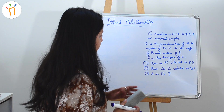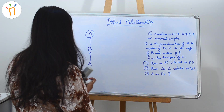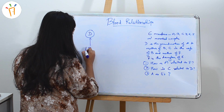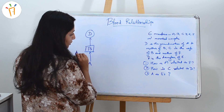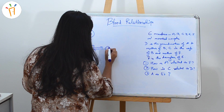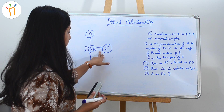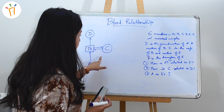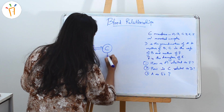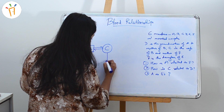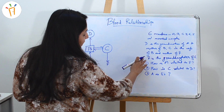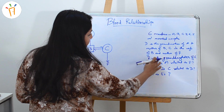C is the wife of B — if C is the wife of B, that means B will be the husband, so let's put a square on B. Since they are husband and wife, we'll denote it with a bi-directional arrow. Then it says C is the mother of F, so we can write F here.